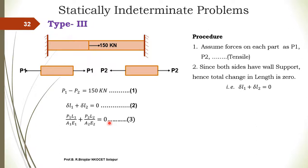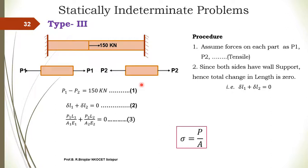If the value of P1 comes out positive, the force on body 1 is indeed tensile as we initially assumed. If P2 is also positive, the force on body 2 is tensile and correct. However, if the value of P2 comes out negative, it means the assumed direction is wrong — the force acting on that body is actually compressive. In this way, we can find the forces on body 1 and body 2, and then calculate the stress induced in each.